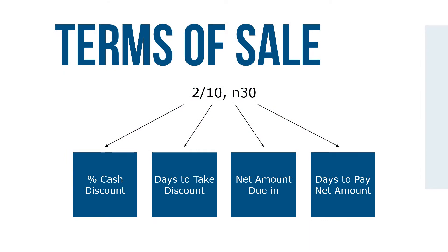If a cash discount is offered, the terms of sale would be written as 2/10/N/30, which means that a 2% cash discount may be taken if the invoice is paid within 10 days. If not, the net amount is due in 30 days.